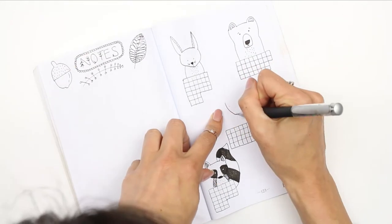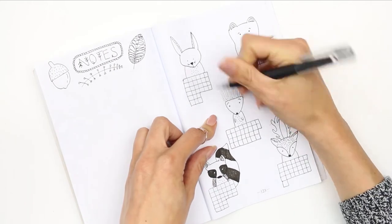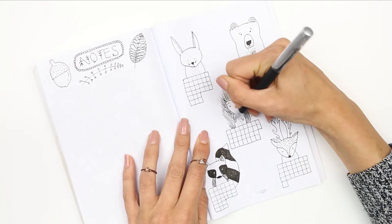So I've done a little rabbit, a bear, a raccoon and a deer, and then lastly I've done, it can either be a hedgehog or a porcupine.